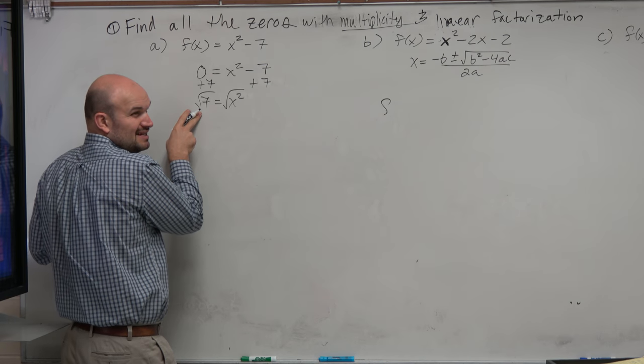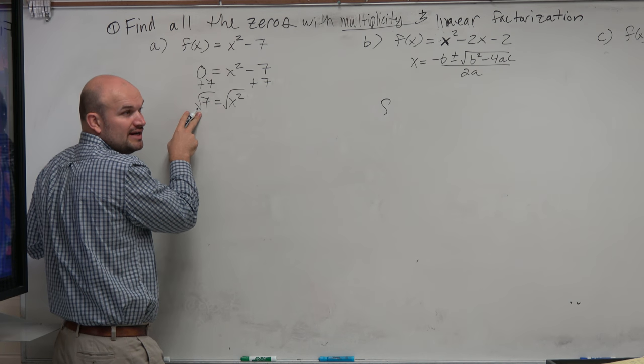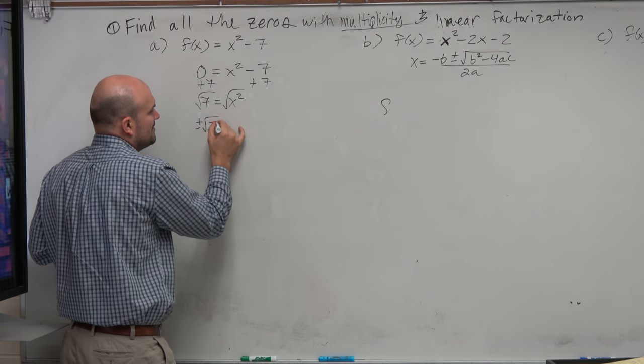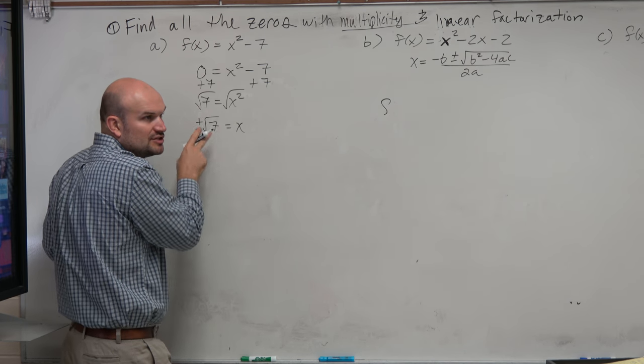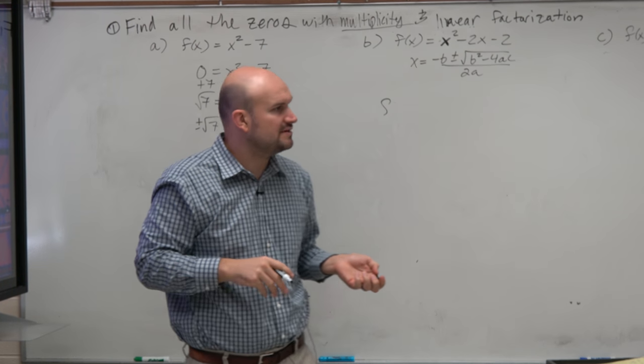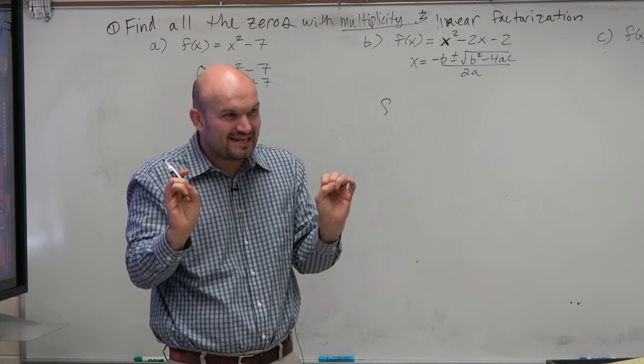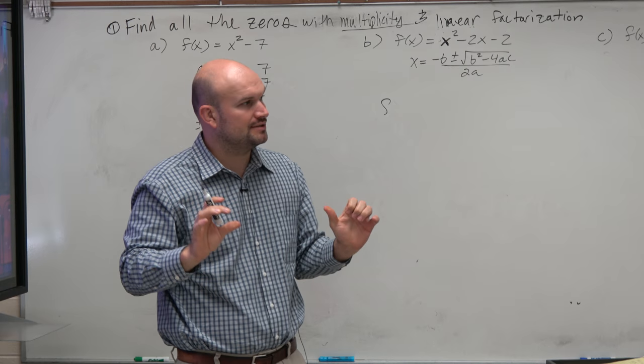Now the problem is I can't do anything else with the square root, right? So I'm just going to have to leave this as plus or minus the square root of 7. Part of the reason why we're not going to be using calculators because I don't want you to approximate the square root of 7 as 2.6457513. I want you to leave it as the exact answer.